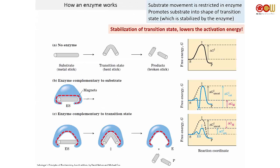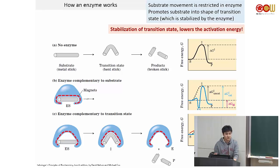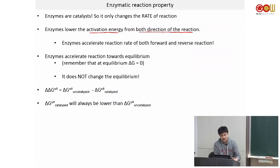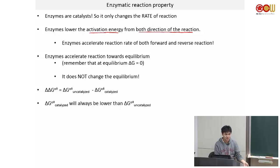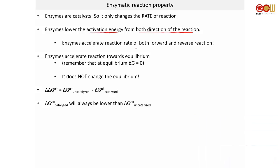By dropping the transition state energy, you lower the activation energy from both the substrate and the product side. So the enzyme can speed up both directions of the reaction, because the activation energy is dropped for both forward and reverse. This reinforces the idea that the direction of the reaction is not changed — you essentially just lower the energy barrier, and the reaction can go forward or reverse. Enzymes accelerate the reaction rate of both forward and reverse reactions.